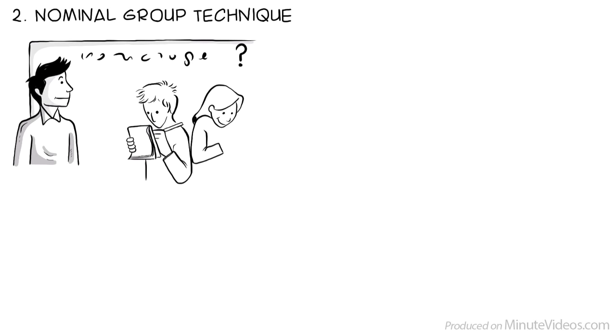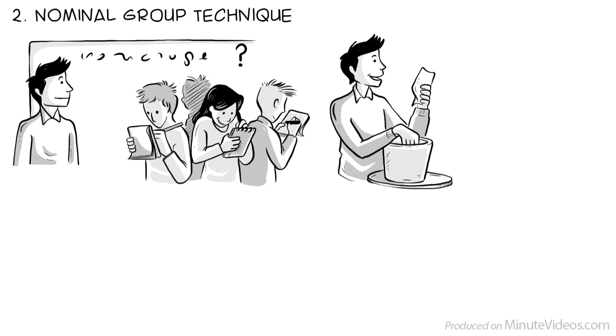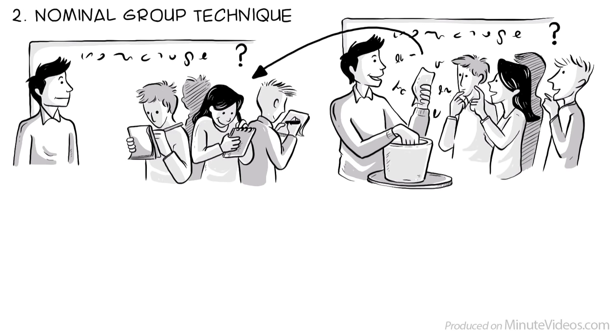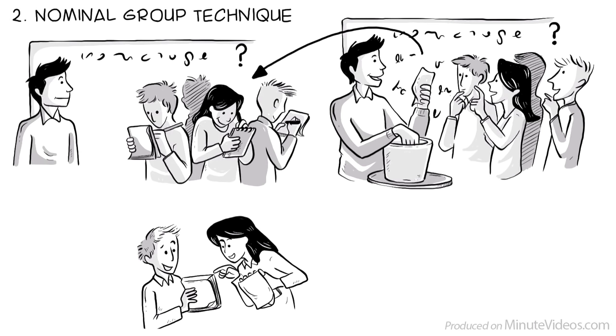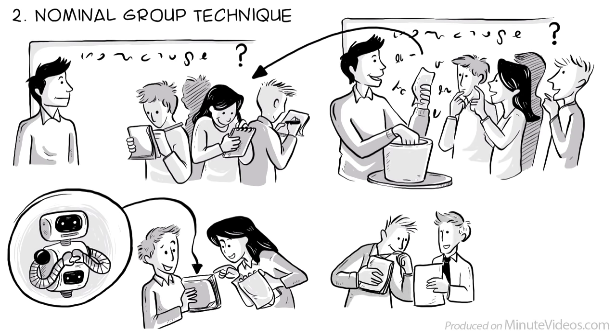The nominal group technique. Explain the ground rules and present the problem. Then ask each person to write their ideas anonymously. Then collect the ideas and let the group vote on each idea. The top-ranked ideas may be sent back to the participants or subgroups for further brainstorming. For example, one group may brainstorm on the form of a product, while the other focuses on the technical features.